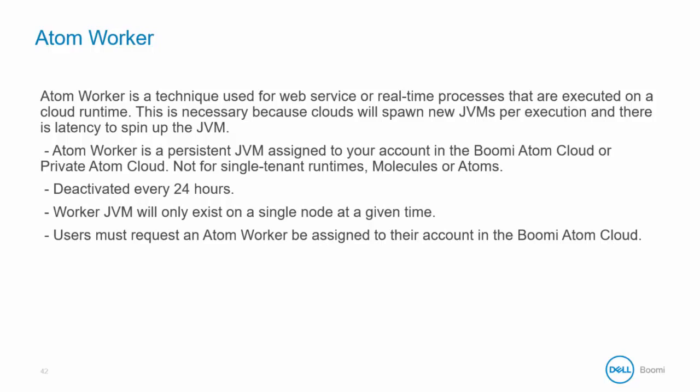There is a certain amount of latency involved to spin up that JVM, around 10 to 12 seconds. In order to reduce response time in a cloud, we employ an atom worker. It is a persistent JVM that lives for 24 hours and will only exist on a single node at a given time. You do not designate specific nodes as an atom worker node, nor do you define how many atom workers will run on a given node. The cloud can be configured to only instantiate atom workers on a subset of the nodes. This is for cloud only, because in a molecule the nodes always persist, so there is no spin-up time for them.